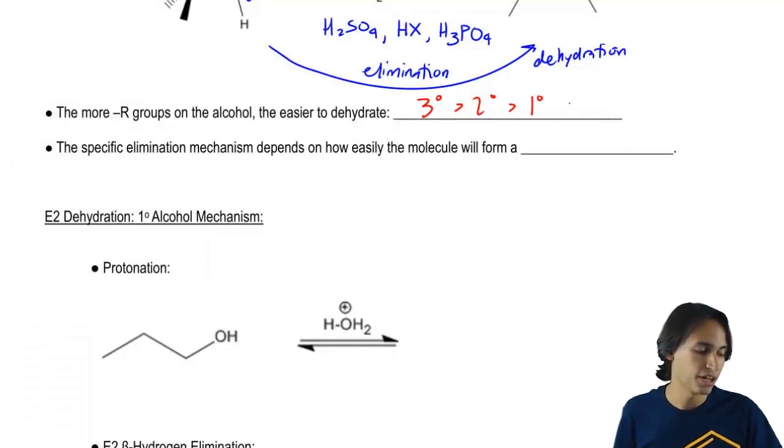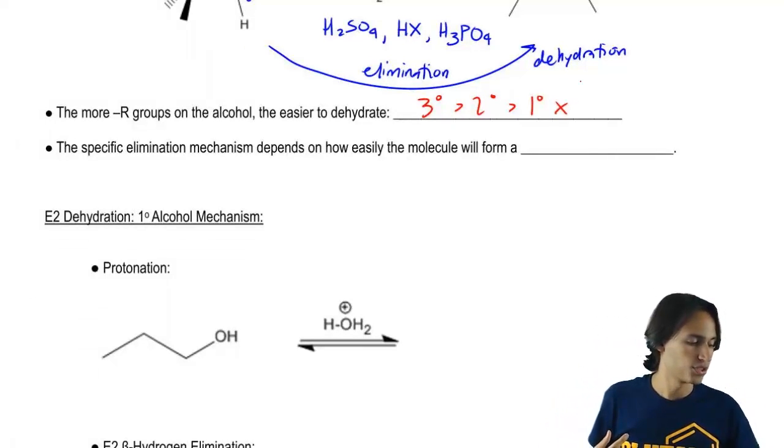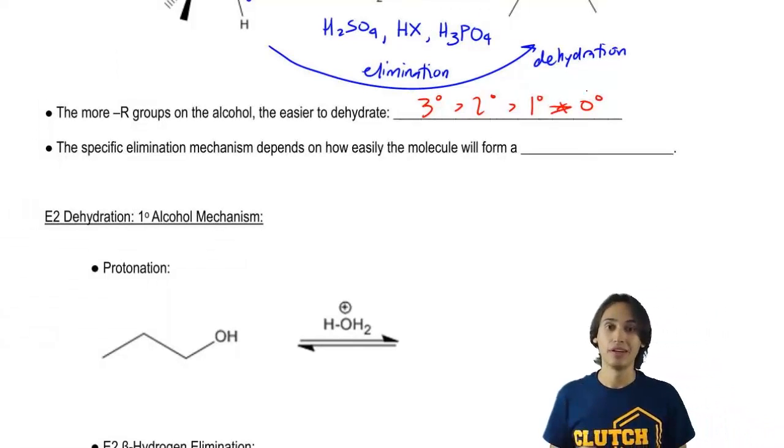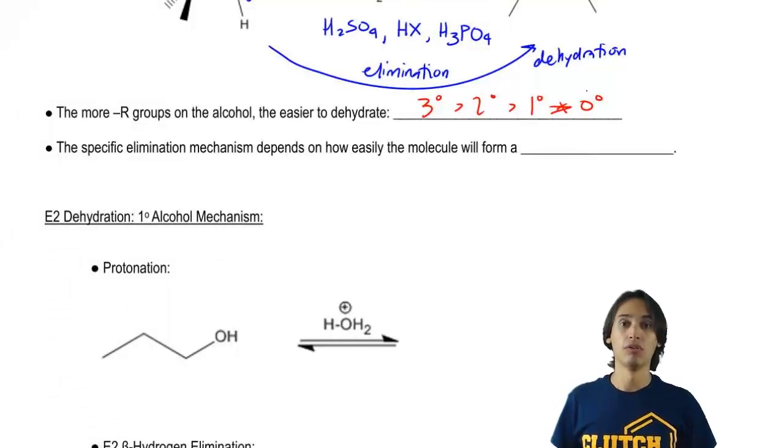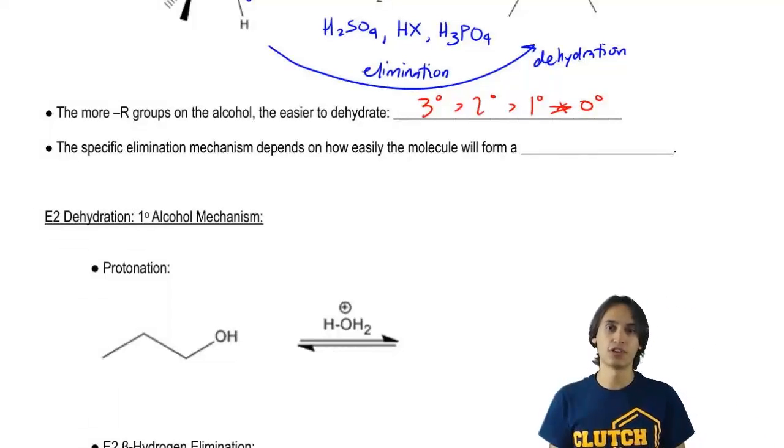Primary is the worst. Methyl can't even happen because if it's a methyl alcohol or methanol, that can't even eliminate because it's only got one carbon. So basically the easiest one is tertiary, the worst one is primary. That's the first thing.